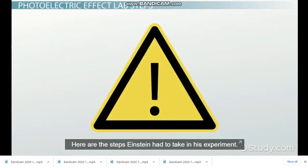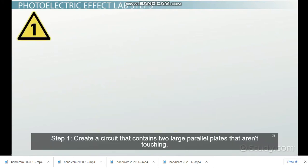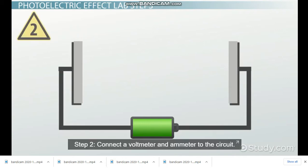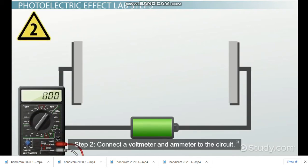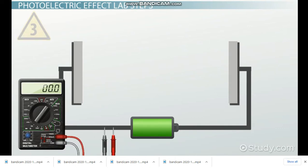Here are the steps Einstein had to take in his experiment. Step 1: Create a circuit that contains two large parallel plates that aren't touching. Step 2: Connect a voltmeter and ammeter to the circuit. The values on the voltmeter and ammeter should read zero initially.